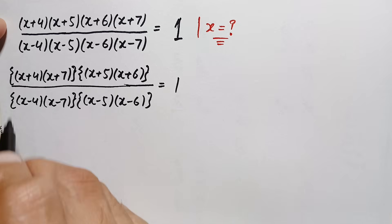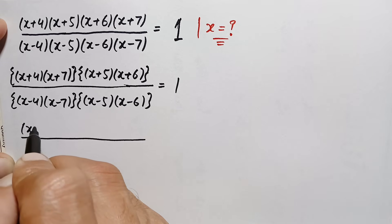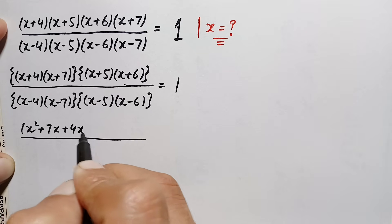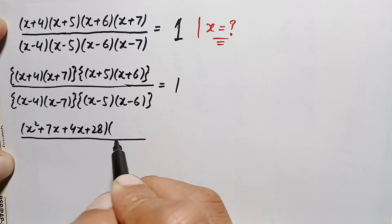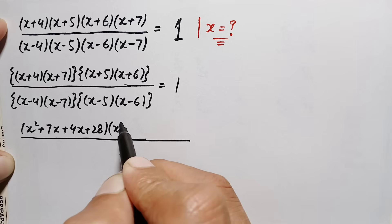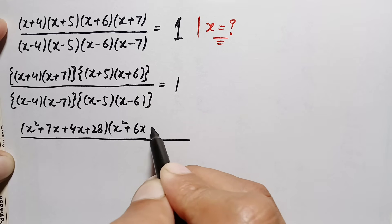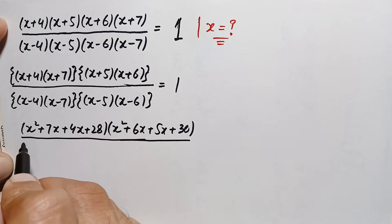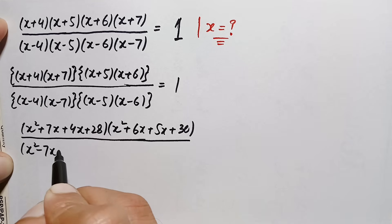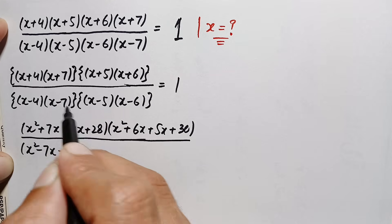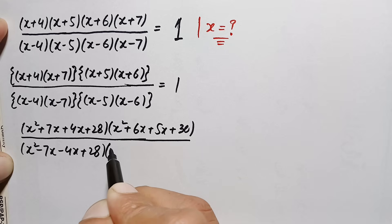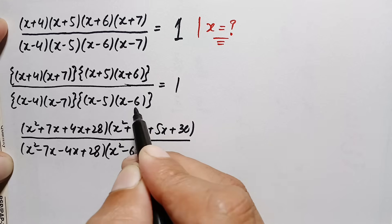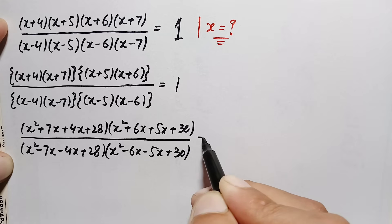Now let's multiply the expressions inside the brackets. The left hand side becomes: x·x is x², plus 7x, plus 4x, plus 28 — times — x² plus 6x plus 5x plus 30, divided by x² minus 7x minus 4x plus 28 — times — x² minus 6x minus 5x plus 30, equals 1.